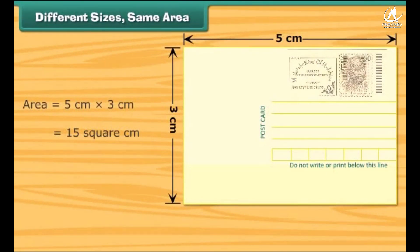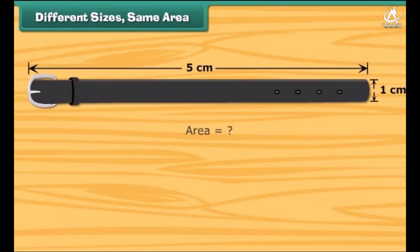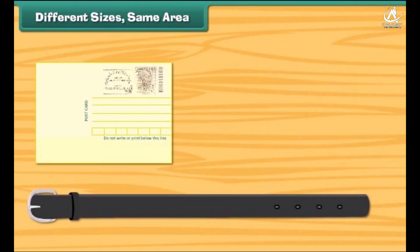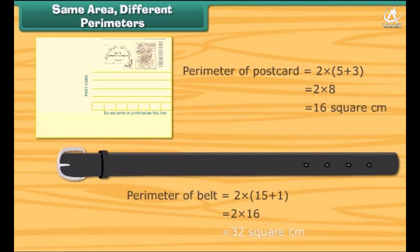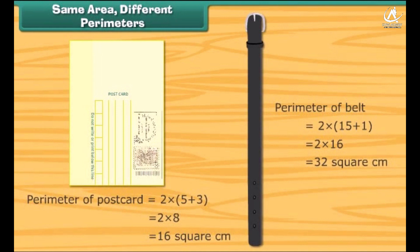Look at this postcard. Its area is equal to 15 square centimeters. What about the area of this belt? It is also 15 square centimeters. Both the postcard and belt are of the same area, but their sizes are different. The perimeter of the postcard is equal to 16 centimeters, while the perimeter of the belt is 32 centimeters. Thus, things with the same area can take different forms and their perimeters can be same or different.